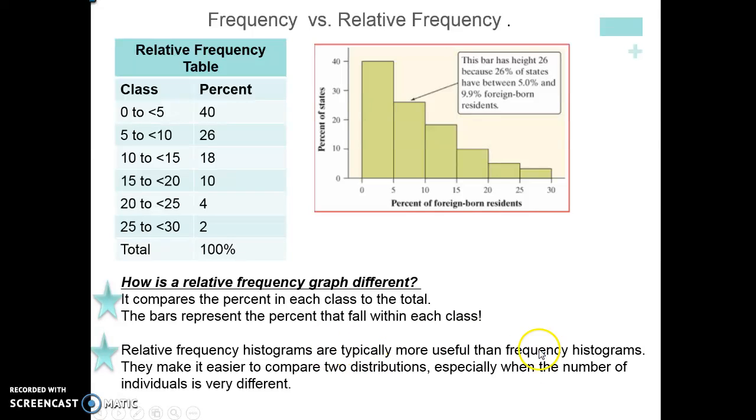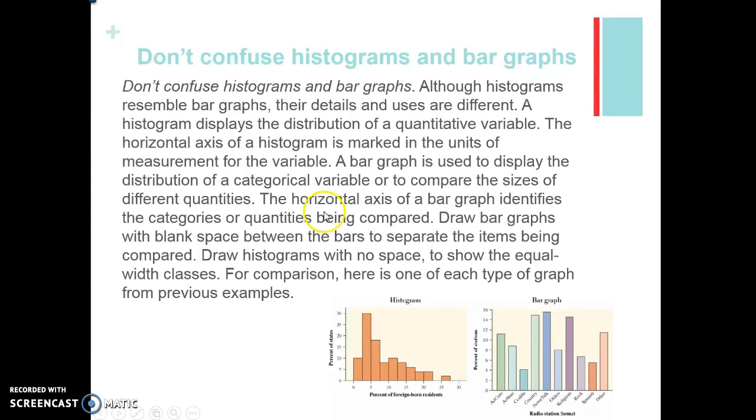Relative frequency histograms are often more useful than frequency histograms because what we can do is we can compare two distributions even if they're completely different. The individuals are different. The way that we collected the data is different, because we're looking at a percent over the whole. And just remember, it always has to add up to 100 percent. Please make sure you don't confuse histograms and bar charts. Notice down here, if we're looking at the percent of foreign-born residents, this class right here, zero, that means there are no states that had that particular percentage. So that means that frequency count is zero. In a bar graph, when there is a gap between the graphs, it does not mean that.